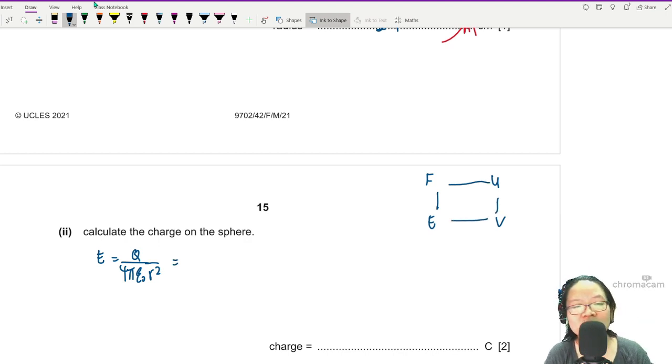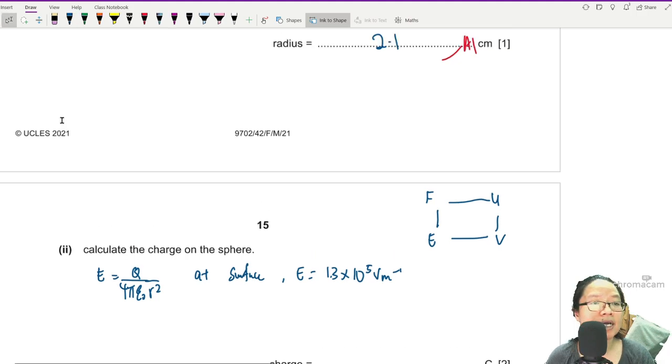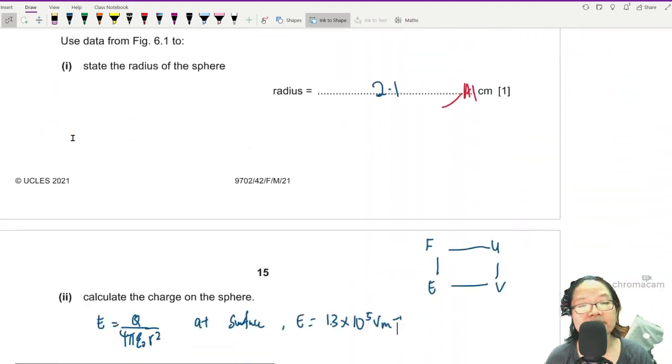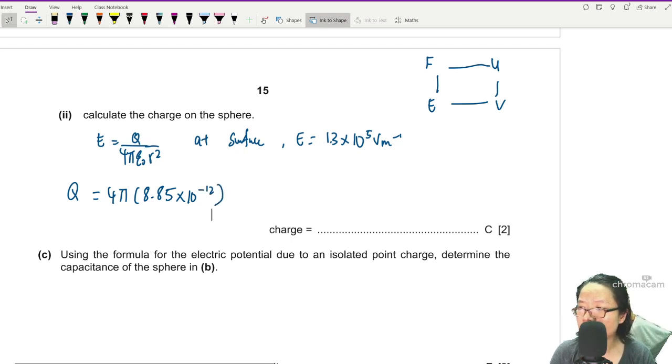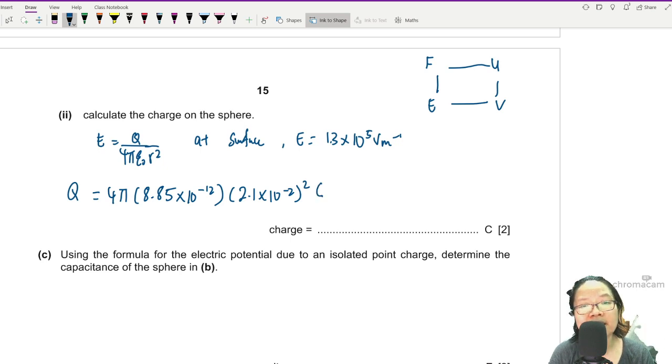Q, we're trying to find Q. I will always say at the surface E is equal to 1.3 times 10 to the power of 5 volts per meter. So I can substitute already. I want to find charge so I'll just bring up and multiply. Q will be equal to 4π epsilon 0, can find in table of constants, times 10 to the power of negative 12 I believe. R squared, radius is 2.1 cm, negative 2 square, and then multiply by E 1.3 times 10 to the power of 5. Show all your substitution. You can immediately press your calculator. Again, many exponents, please learn to use the E button, if not it's just painful.